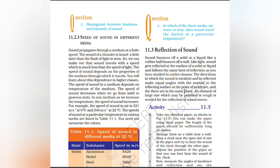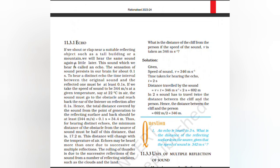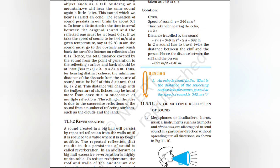Echo: If you shout or clap near a suitable reflecting object such as a tall building or a mountain, you will hear the same sound again a little later. This reflected sound is called an echo. The sensation of sound persists in our brain for 0.1 second. To hear a distinct echo, the time interval between the original sound and the reflected one must be at least 0.1 second. If the speed of sound is 344 m/s at 22°C, sound must travel to the obstacle and back to the listener in 0.1 second. Hence the total distance covered should be at least 34.4 m. Thus for hearing a distinct echo, the minimum distance of the obstacle from the source of sound must be half of that — 17.2 m. The distance will change with the temperature of the air.